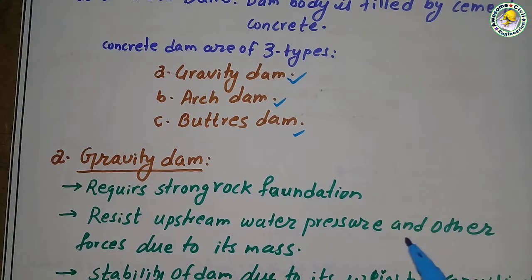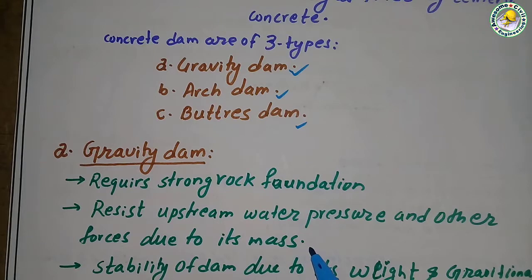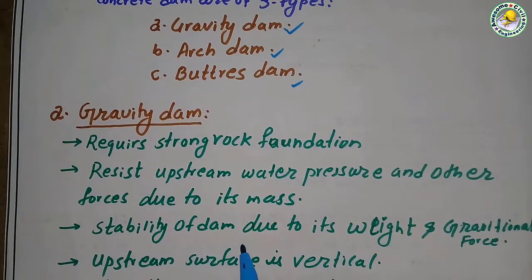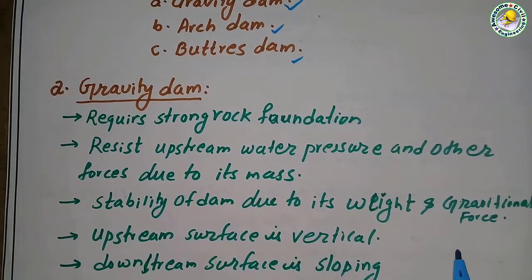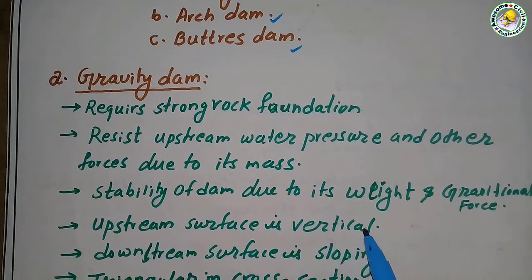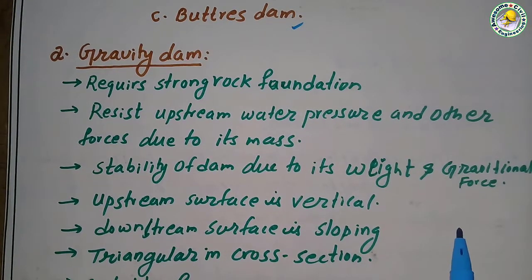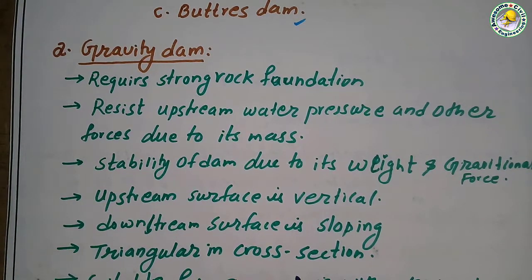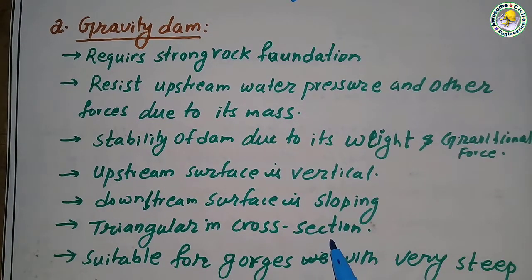Gravity dam requires a strong rock foundation. It resists water pressure and other forces due to its mass. The stability of the dam is due to its weight and gravitational forces. The upstream surface is vertical and the downstream surface is sloping.